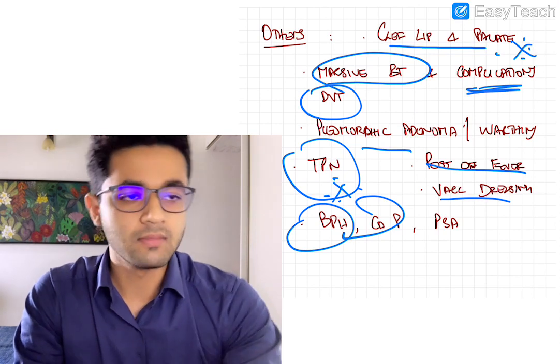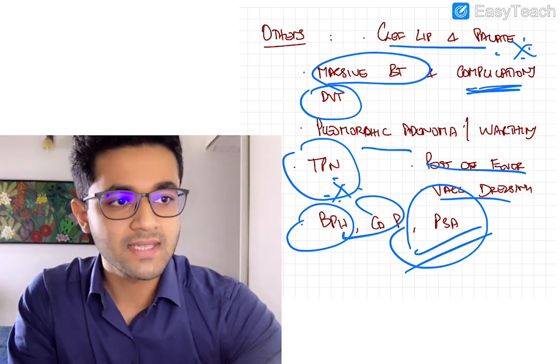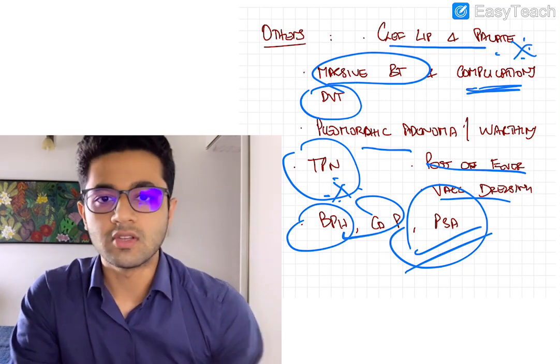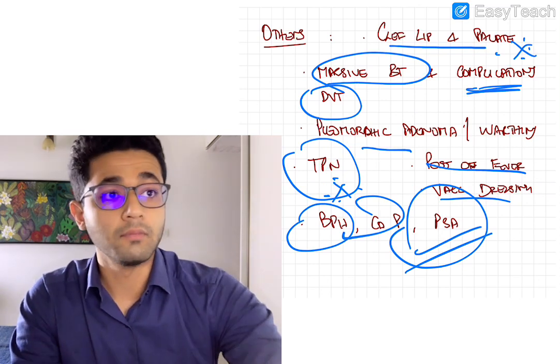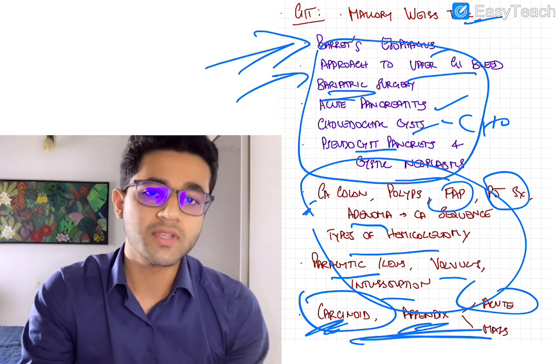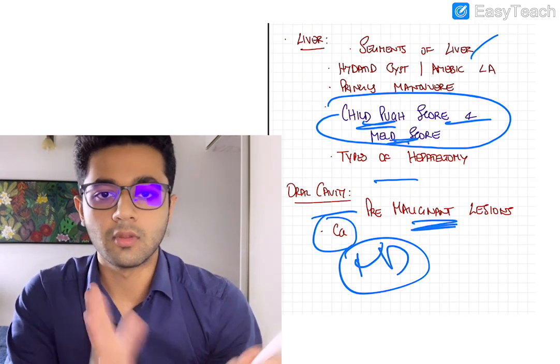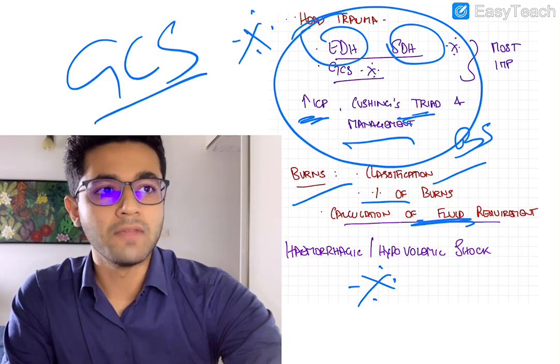BPH, CA prostate, sometimes asked. But more importantly, PSA, prostate-specific antigen is very significant. So I think these are a few additional topics which can be helpful. And this is actually covering around 60-70% of surgery. But I've tried to really try and limit this to only the important topics. So if you can't do anything, make sure you do trauma,